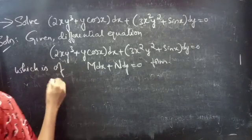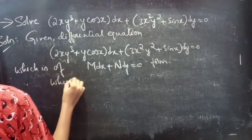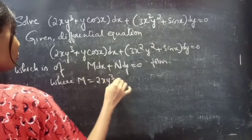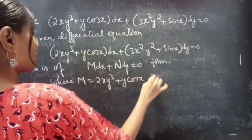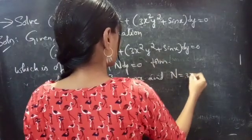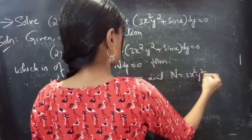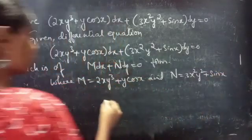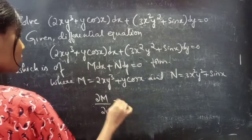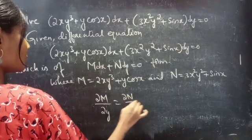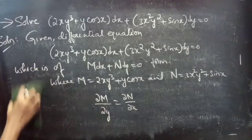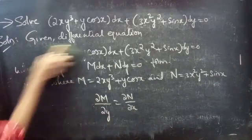So, by comparing these two, we will get M equals to 2xy³ + y cos x, and N equals to 3x²y² + sin x. If the partial derivative of M with respect to y equals to the partial derivative of N with respect to x, then we can say that the given differential equation is an exact equation.